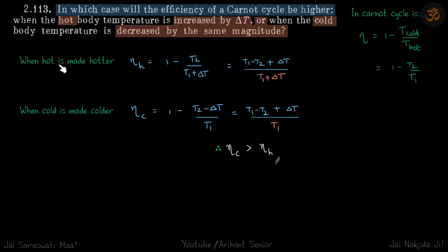Now when the hot is made hotter, the new efficiency becomes 1 minus T2 by T1 plus delta T. So T1 is the hot one, so when hot is made hotter, T1 becomes T1 plus delta T.